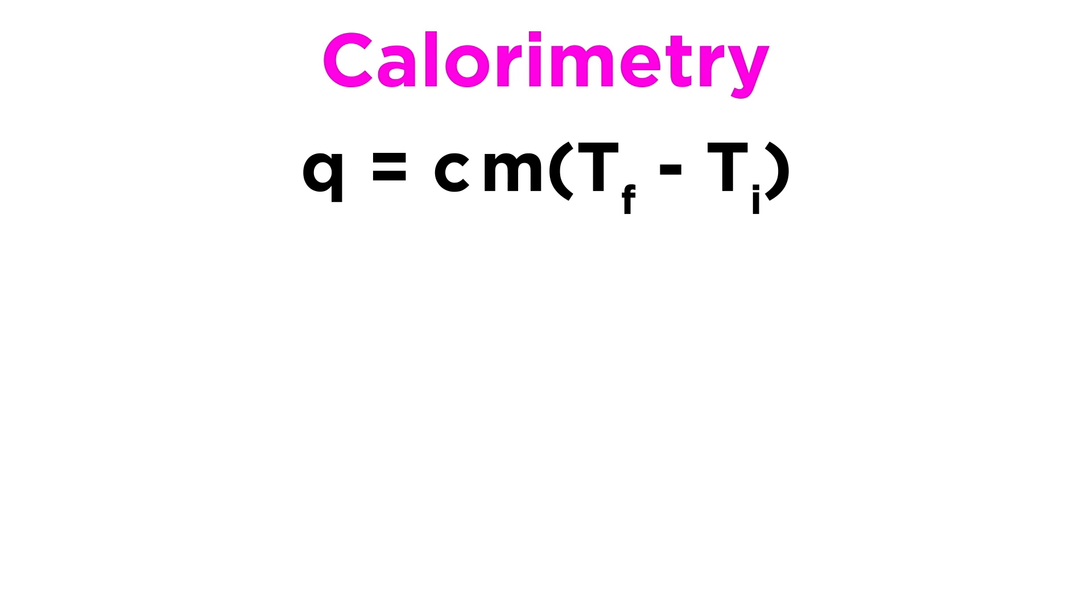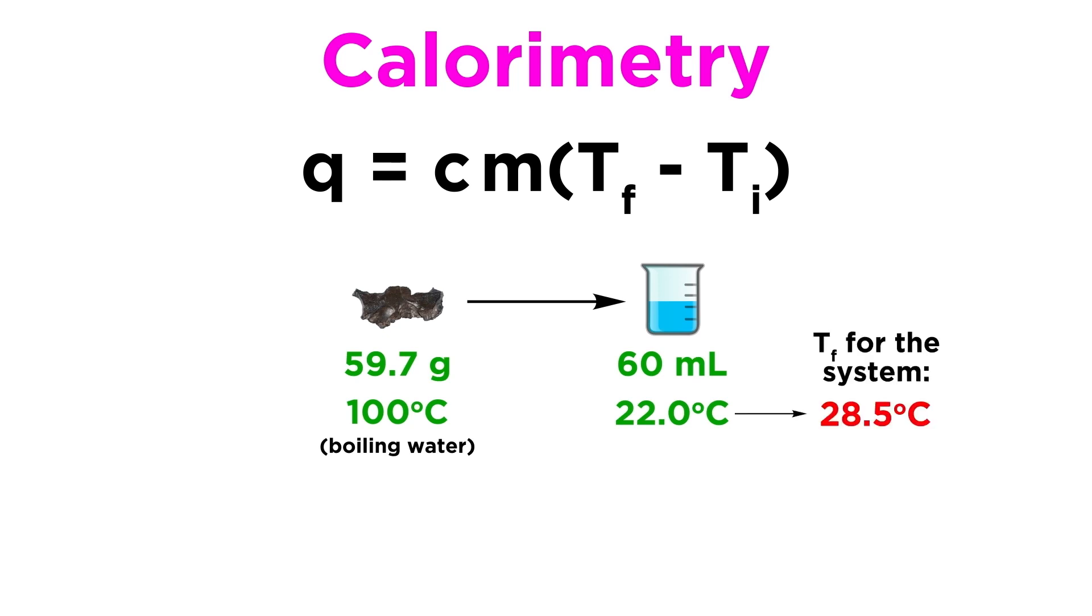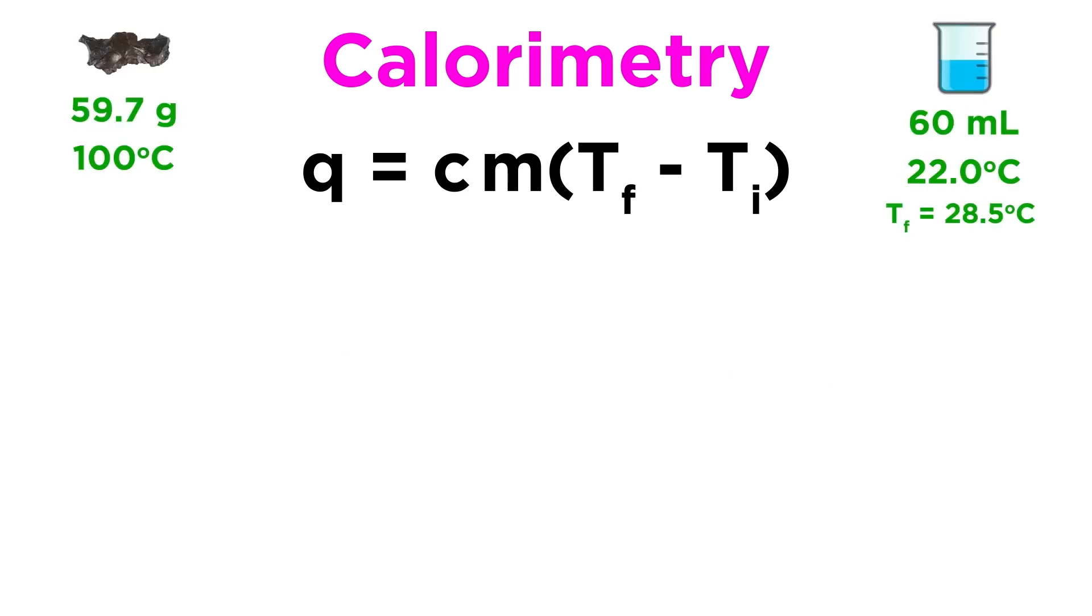Let's get a little more mathematical with this. For example, let's say a 59.7 gram piece of metal, submerged in boiling water, is transferred into 60 milliliters of water initially at 22 degrees Celsius. The temperature of the water is raised to 28.5 degrees as a result of the heat transfer. What is the specific heat of the metal? Just as we discussed, let's first use the given data to figure out the heat absorbed by the water using this equation.